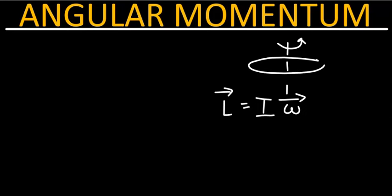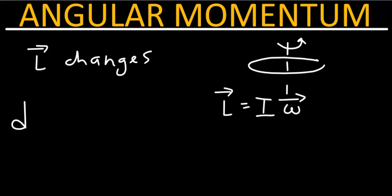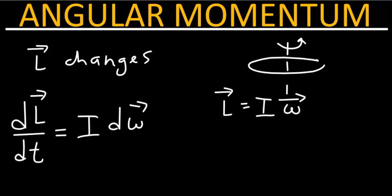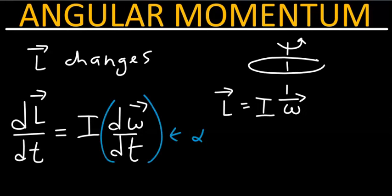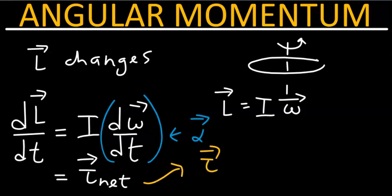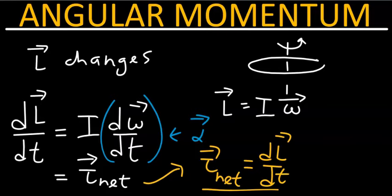Let's briefly discuss what happens if the angular momentum changes. When we take the derivative of angular momentum with respect to time, we get the moment of inertia times the derivative of angular velocity with respect to time, which is just angular acceleration. So moment of inertia times angular acceleration is just the net torque, according to Newton's second law for rotation. The net torque acting on a system will cause its angular momentum to change.